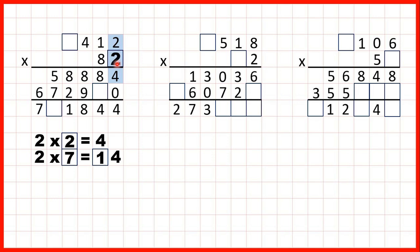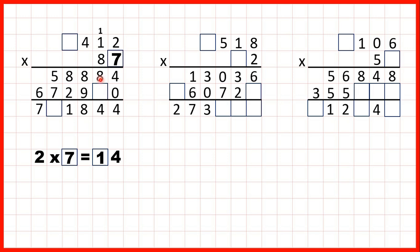For now, let's write a 2 in this box. 2 times 2 is 4, but then the next calculation we would do is 1 times 2, and 1 times 2 is not 8. So we know that this box isn't a 2, so that means it must be a 7. They must have done 2 times 7 to get 14, and then written the 1 above the next place value column along. Because now, 1 times 7 is 7, and if we add the 1 on top, we get 8, so that fits with the rest of the question.